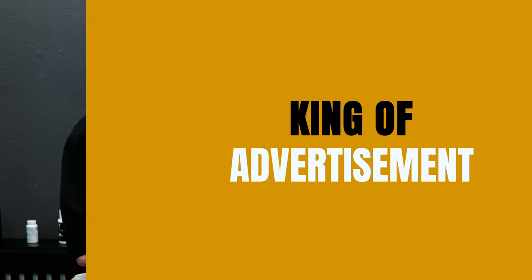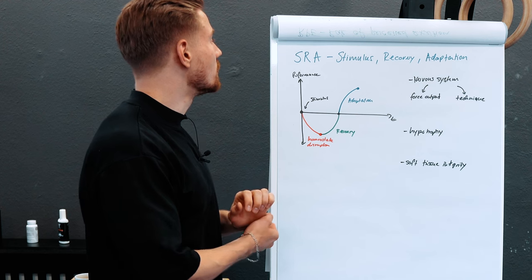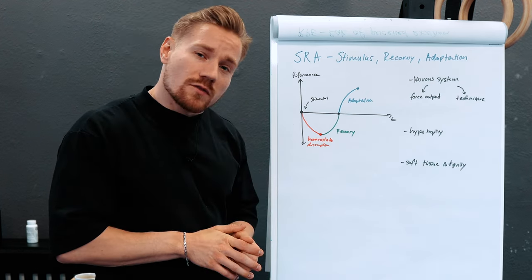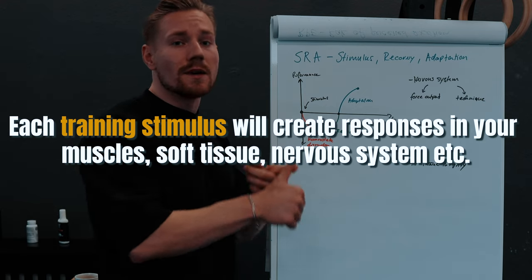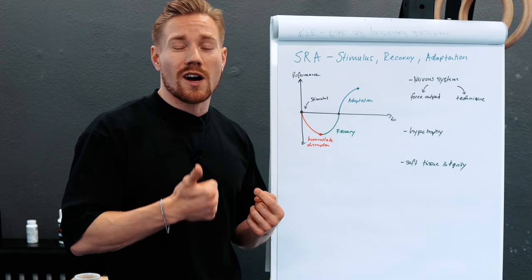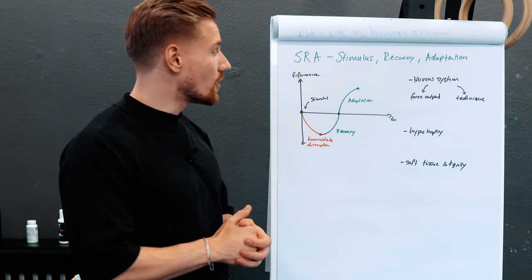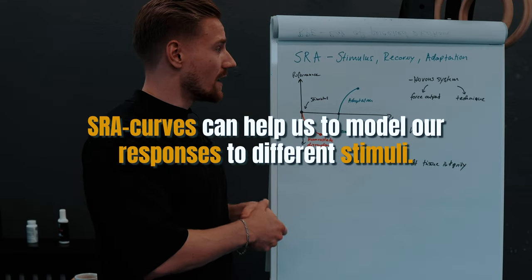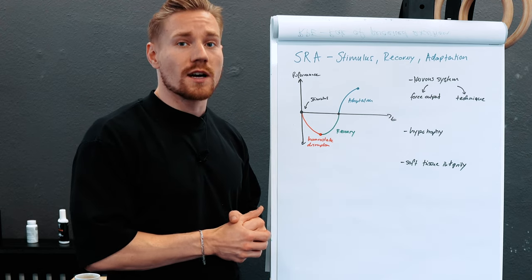To further dive into the concept of using RPEs, we first need to understand another concept: the model of SRA curves — Stimulus, Recovery, and Adaptation curves. This is important because each training stimulus creates responses in your muscles, soft tissue, and nervous system. Those responses differ depending on the stimulus you provide — how you train, how often, and how intensely. SRA curves help model those different responses for different tissues and systems in our body, and later we'll learn how to balance them using RPEs.